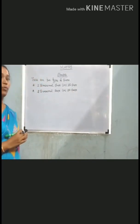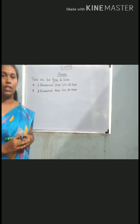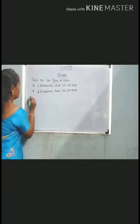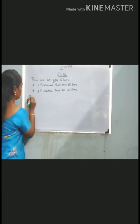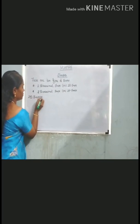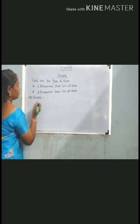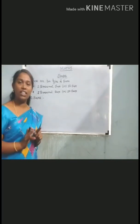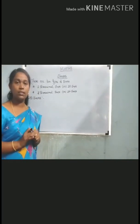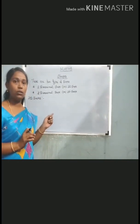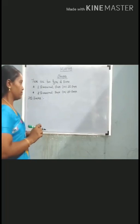Now we are going to see the topic 2D shapes. 2D shapes means they do not have any thickness. It can be measured in two faces.